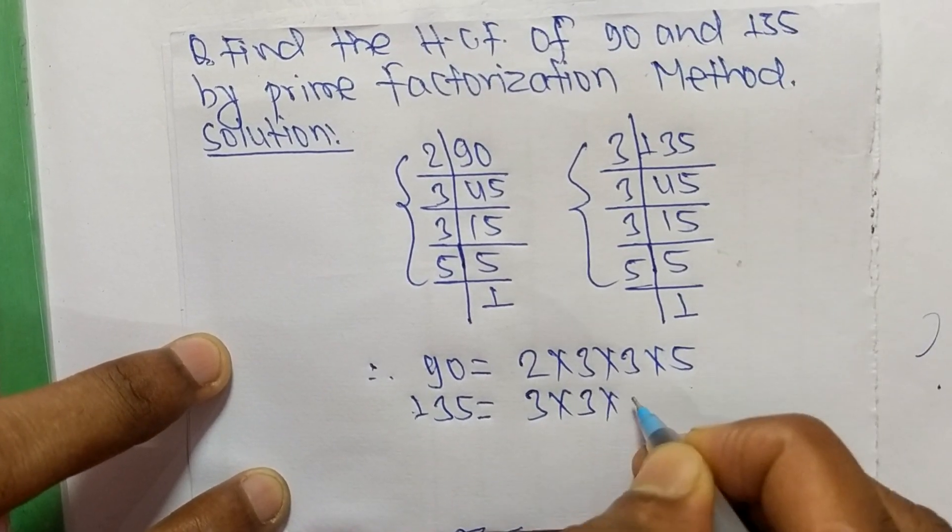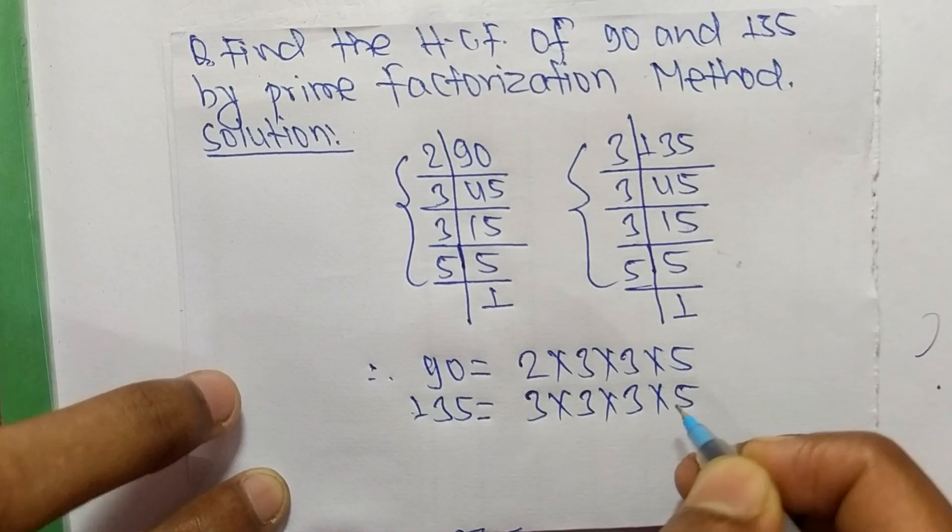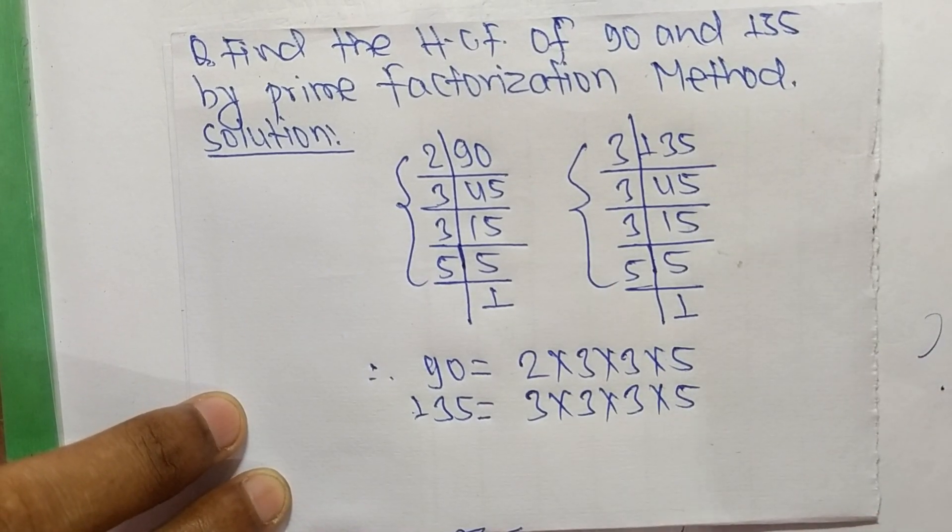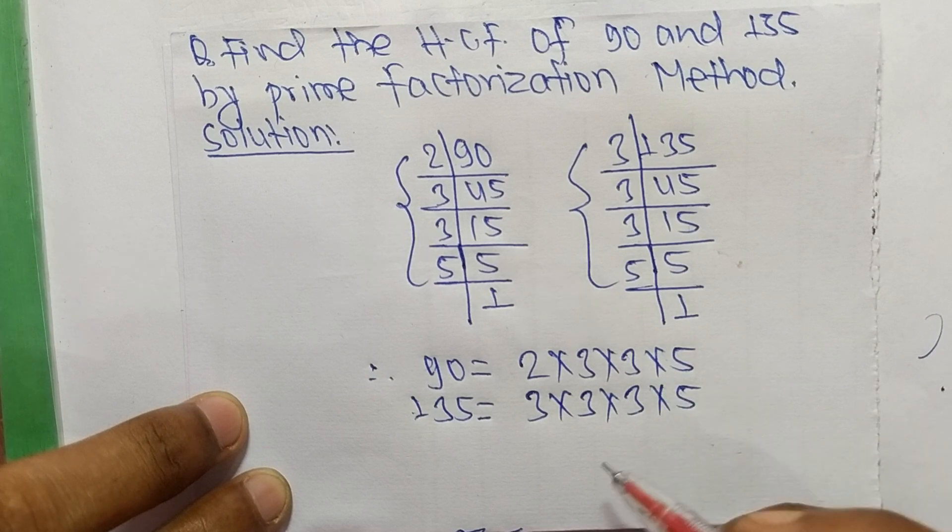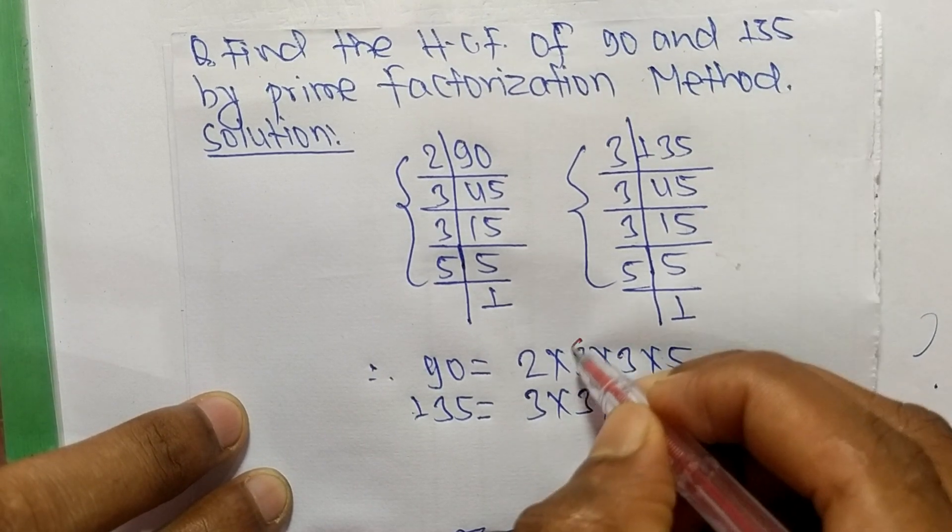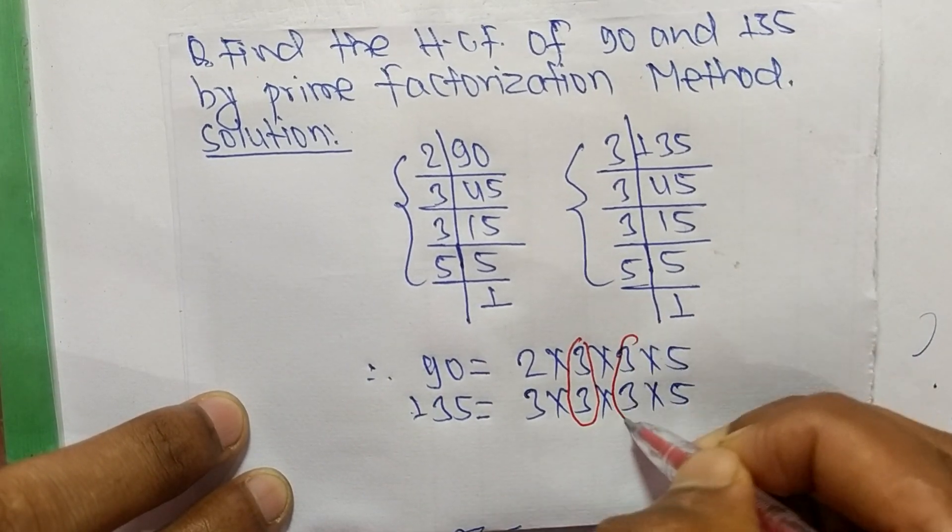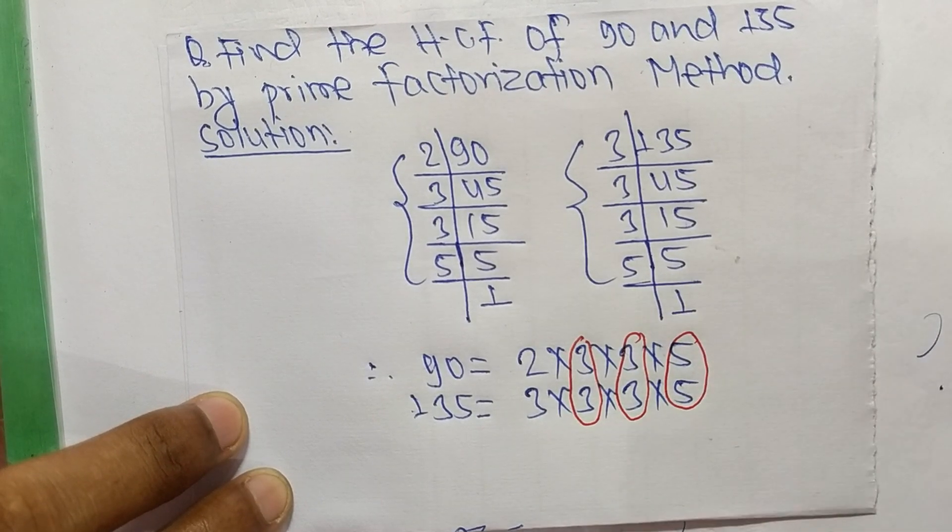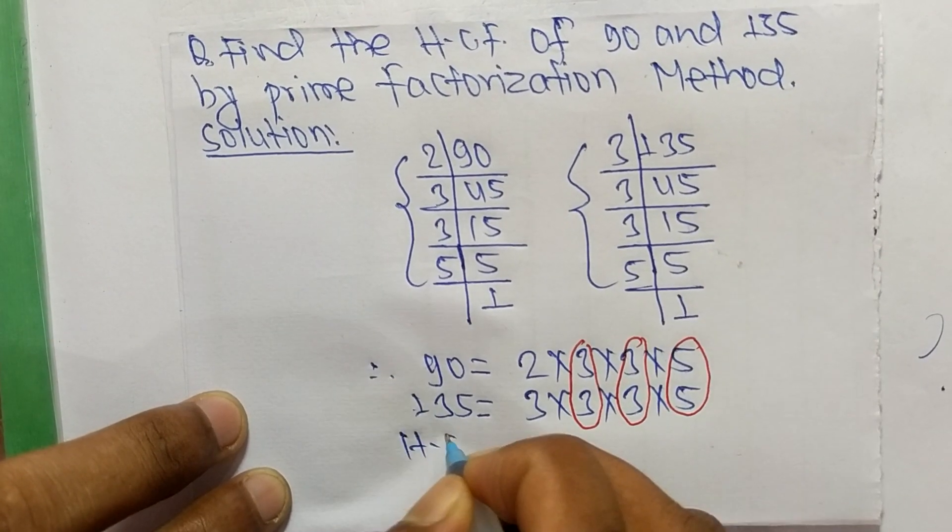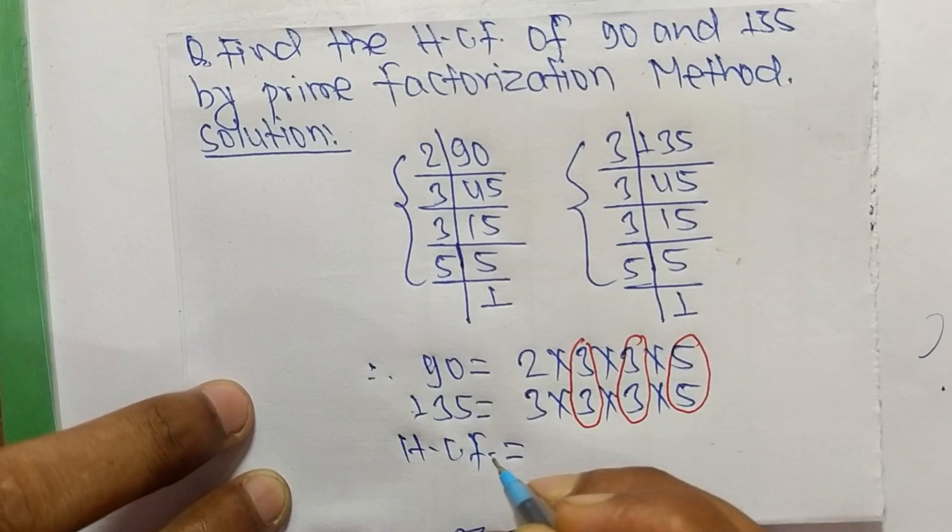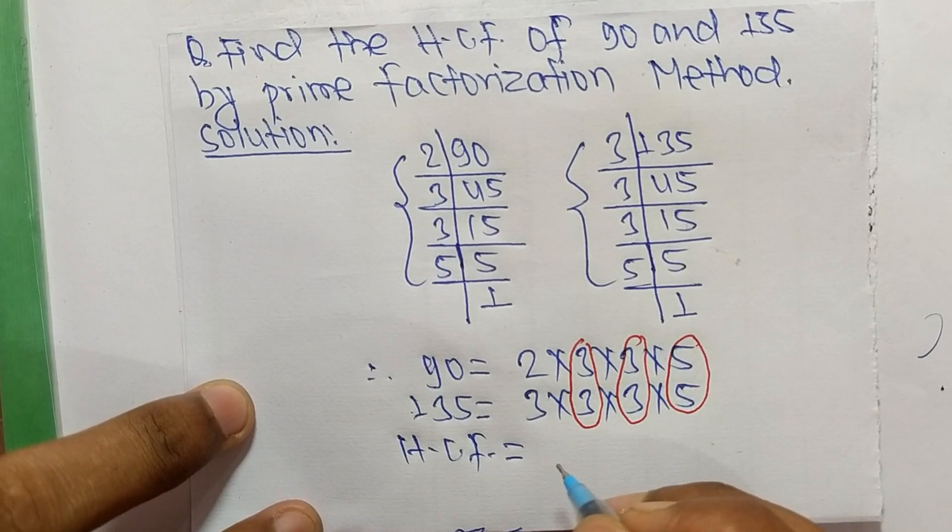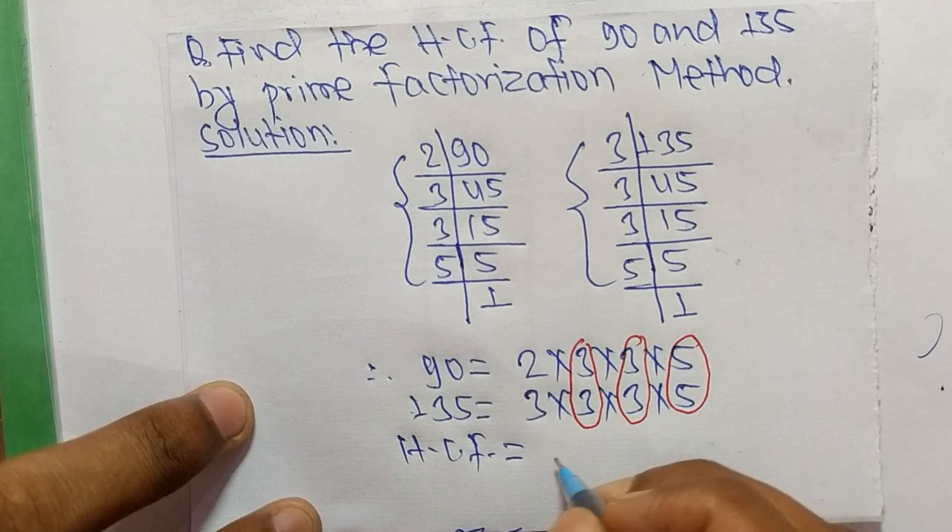So now we select the common factors in these prime factors. So common here is 3, 3, and 5. So its HCF is equal to product of common factors and common here are 3, 3, and 5.